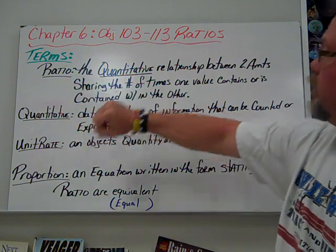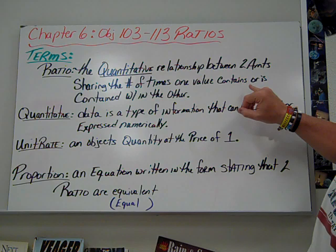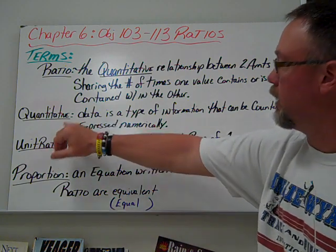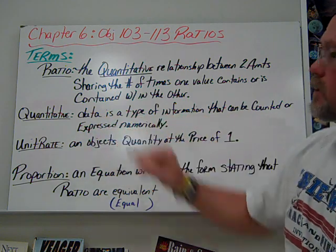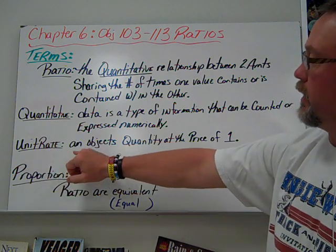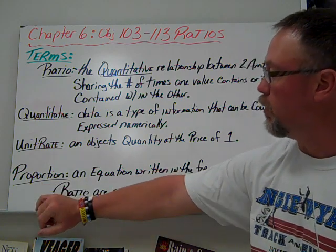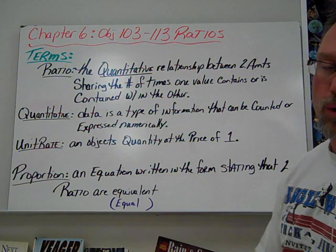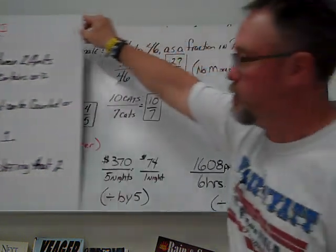A ratio is the quantitative relationship between two amounts sharing the number of times one value contains or is contained within the other. Quantitative is data that can be counted or expressed numerically. Unit rate is an object's quantity at the price of 1. Proportion is an equation written stating that two ratios are equivalent or equal. This is how I solve a lot of my problems regarding conversions.